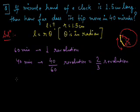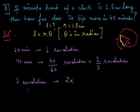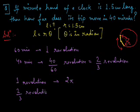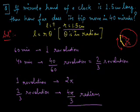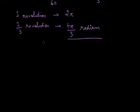We know that in one complete revolution, the angle subtended is 2 pi radians. So in 2 by 3 of a revolution, the angle subtended is 4 pi by 3 radians. We now have the radius and the angle, so we can apply the formula to find L.